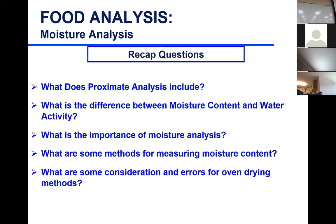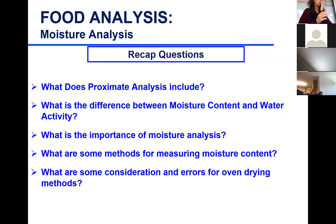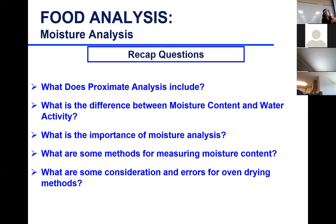What is the difference between moisture content and water activity? Moisture content is the total amount of water that is not chemically bonded to different components, whereas water activity is actually the ratio of the vapor pressure of water from the headspace over the sample to the pressure of pure water — so it's the relative measure.